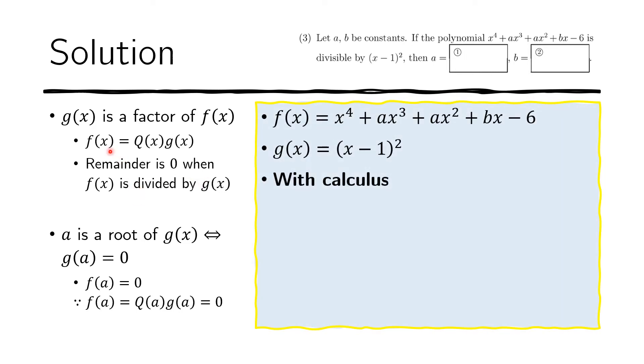So for the calculus solution, we actually make use of this: that if we know that a is a root of G of X, meaning if G of a equals zero—in this case, if we have a equals one, that makes this zero—then we also have F of a equals zero.